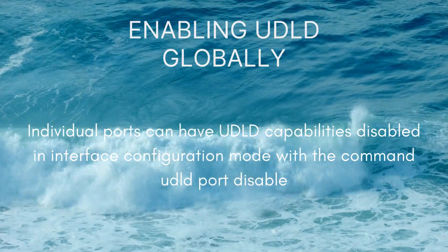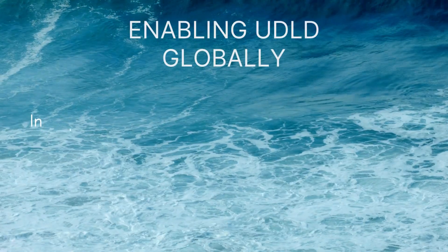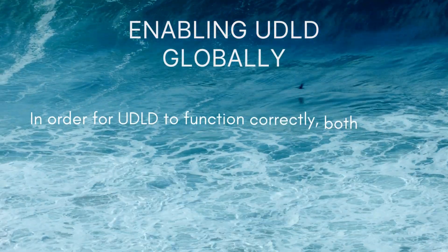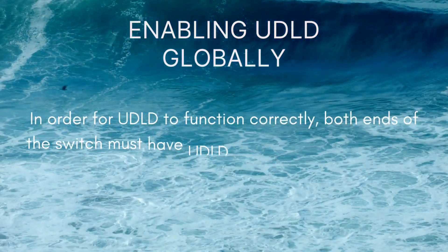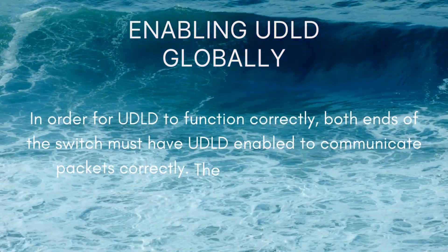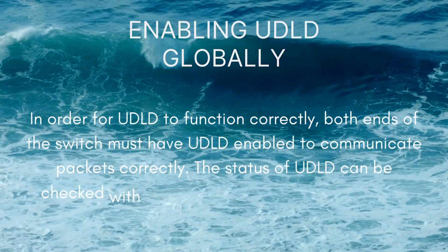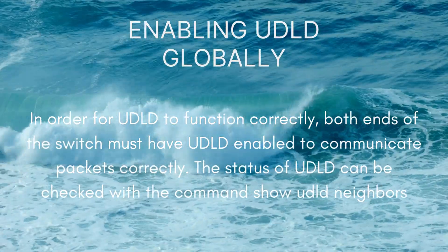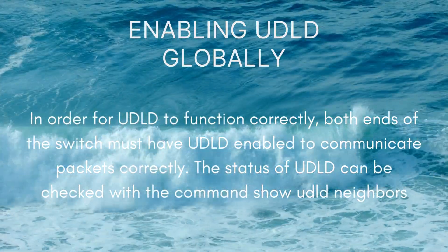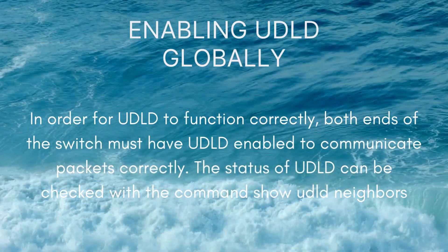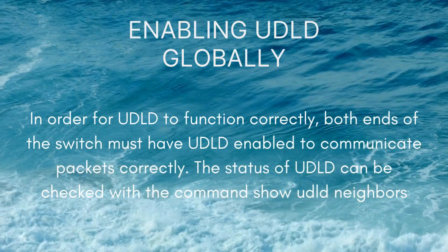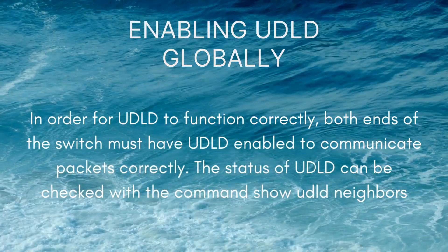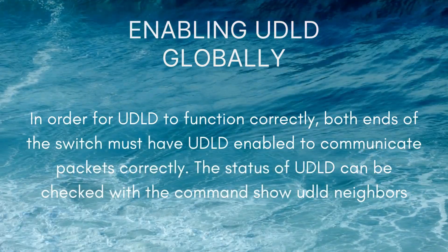In order for UDLD to function correctly, both ends of the switch must have UDLD enabled to communicate packets correctly. The status of UDLD can be checked with the command 'show udld neighbors'.